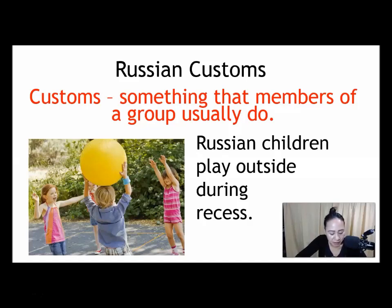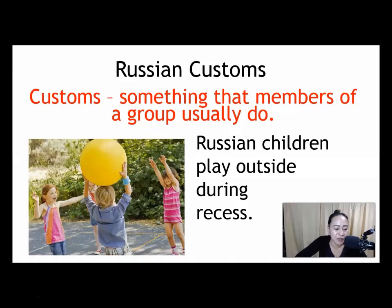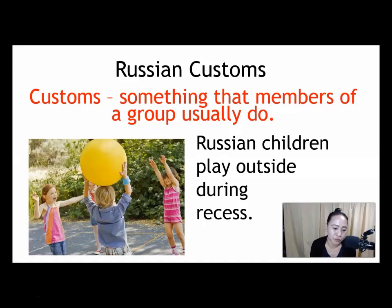In Moscow, students in early grades often share school buildings — for example, grades 1, 2, and 3 in one building, and grades 4, 5, and 6 in another. The same as our school — we have three buildings: elementary, primary, middle school, and high school. In the United States, younger students usually have their own separate schools, which is different.